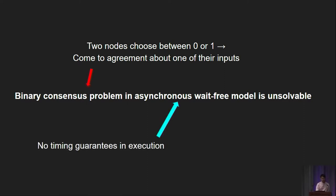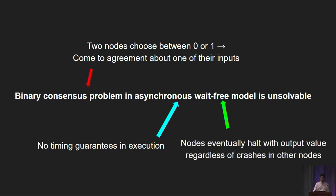We're assuming an asynchronous model, meaning there's no timing guarantee in the execution time. One node might run the computation really quickly, the other might take ages — there's no lower nor upper bound on execution time. We're also assuming a wait-free model, meaning that nodes will eventually halt with an output value regardless of crashes in other nodes. You can interpret this as fault tolerance: even if nodes might crash arbitrarily in the protocol, the other nodes should not be blocked and should still terminate safely. For example, if both nodes are given 1 and the first node crashes in the middle of the protocol, the other node should still terminate safely with 1.